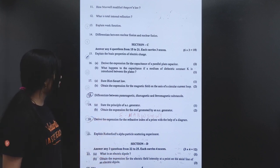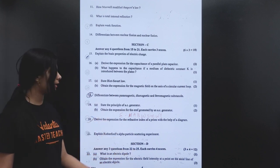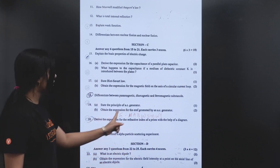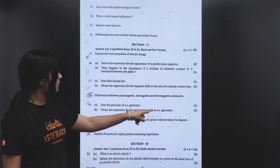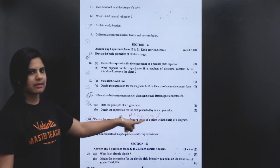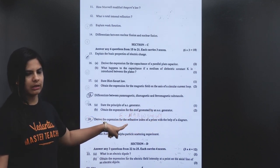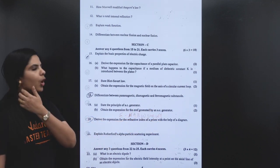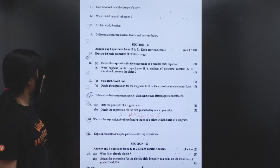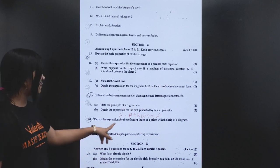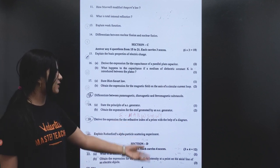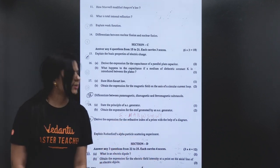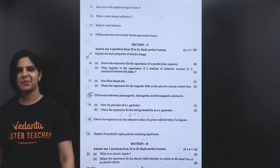State the principle of an AC generator — that is electromagnetic induction. Obtain the expression for EMF generated by an AC generator. This expression is E = NABω sin ωt.